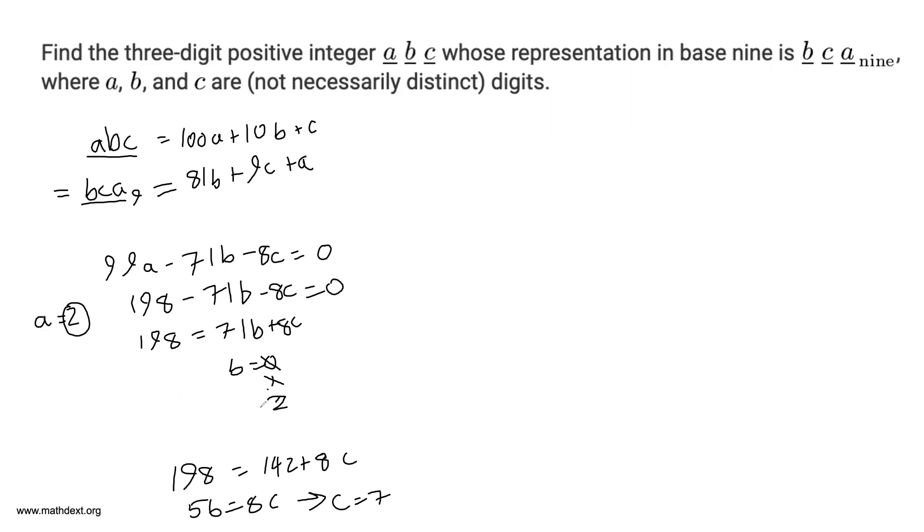A is equal to 2, B is equal to 2, C is equal to 7. So your answer is the three-digit positive integer 227. That is our final answer. So we are done. Thanks for watching and I will see you next time.